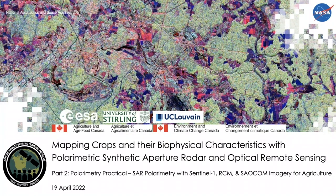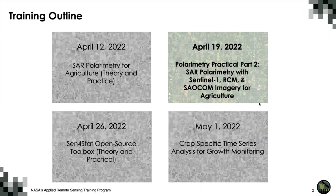Welcome back to the RSET training: Mapping Crops and Their Biophysical Characteristics with Polarimetric Synthetic Aperture Radar and Optical Remote Sensing. Last week, we learned about SAR polarimetry theory and held the first part of the polarimetry practical: Intensity-Derived Parameters for Agriculture Monitoring.